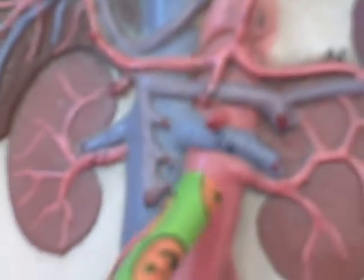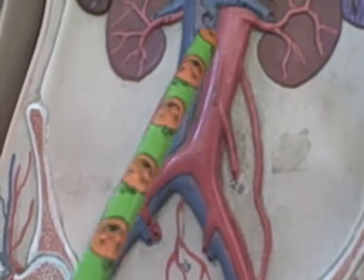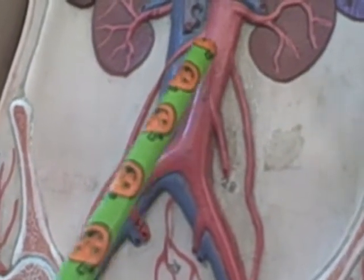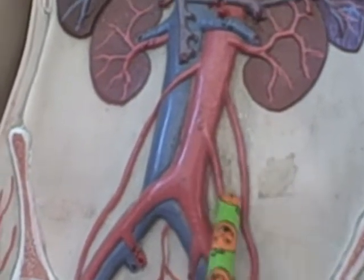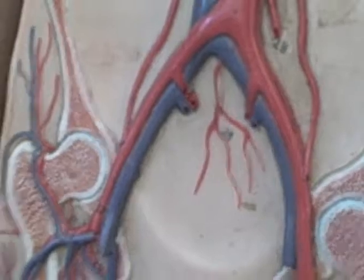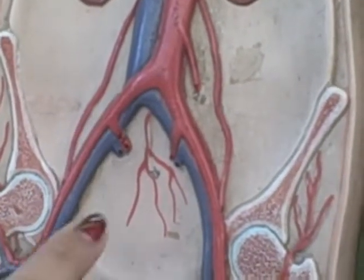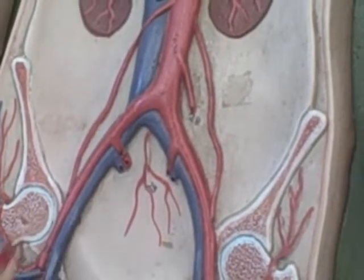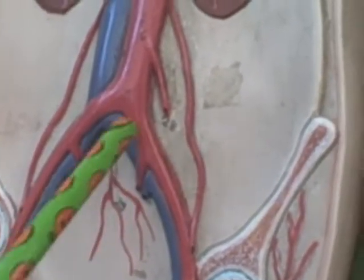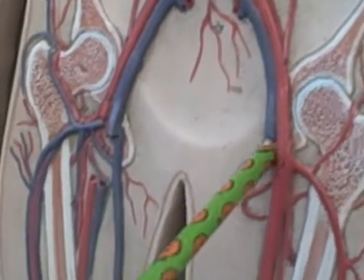And then it goes down to the gonadal artery, or the ovarian artery. And then going down on the abdominal aorta, this is the inferior mesenteric. And then your abdominal aorta is going to split into two — this is the right and left common iliac. So this is the right common iliac, and this is the left common iliac.